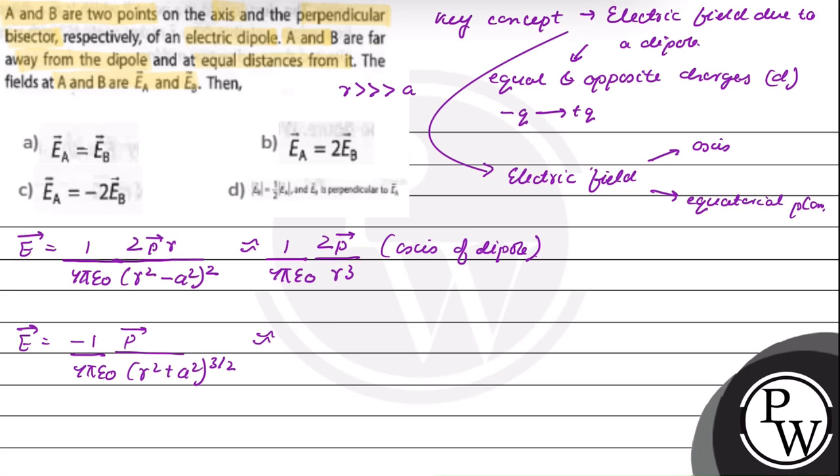If R is very, very larger than a, it becomes minus 1 by 4 pi epsilon 0, P vector upon r cube. The minus sign denotes the direction of the electric field vector with respect to the direction of the dipole moment.